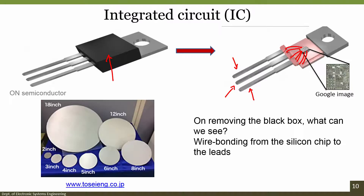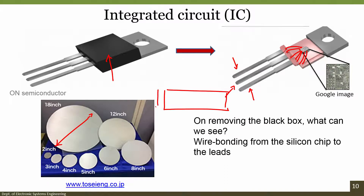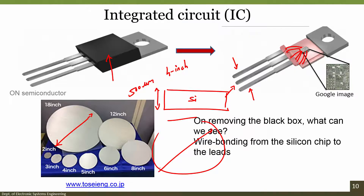When you want to use a silicon wafer as a substrate, its size ranges from 2 inches all the way to 18 inches in diameter. When I say 2 inch, 4 inch, 8 inch, 12 inch or 18 inch, the inch refers to the diameter of the wafer. For example, a 4-inch diameter wafer has a thickness of close to 500 micrometers. The photo shows different kinds of wafer sizes available in the market.